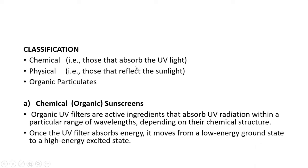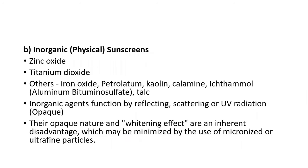Organic UV filters absorb UV radiation within a particular range of wavelengths — only that particular wavelength is absorbed, depending on the chemical structure. Once the UV filter absorbs energy, it moves from the low-energy ground state to a high-energy excited state. The next category is inorganic or physical sunscreens; examples include zinc oxide, titanium dioxide, iron oxide, petrolatum, kaolin, calamine, ichthammol, aluminium, vitamin O sulfate, and talc.